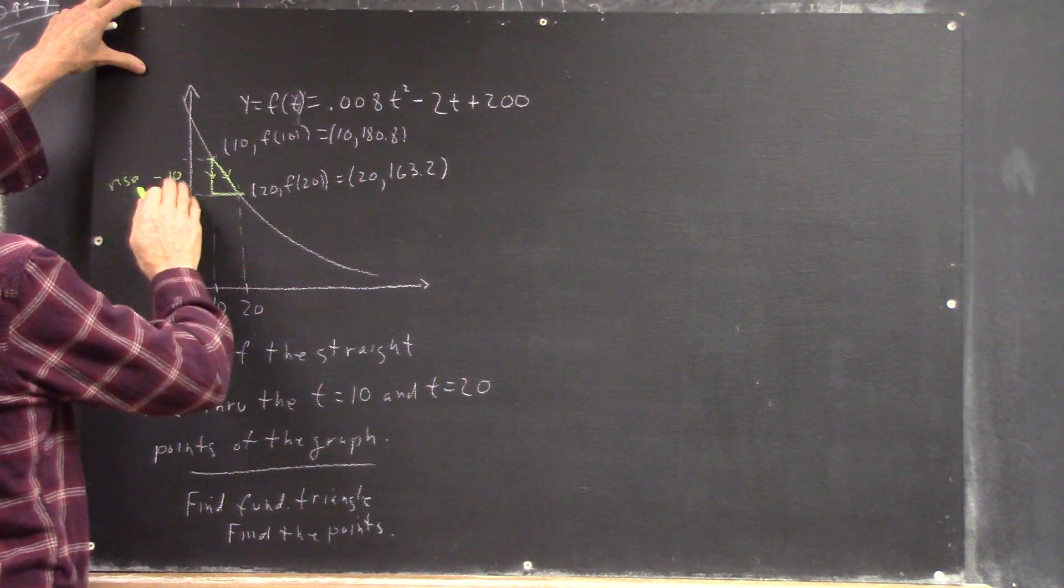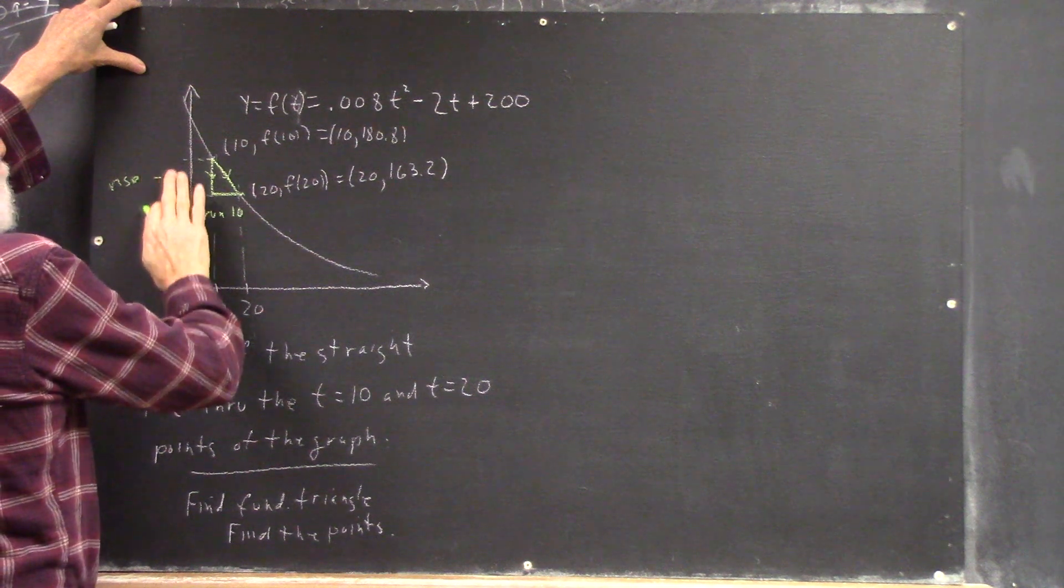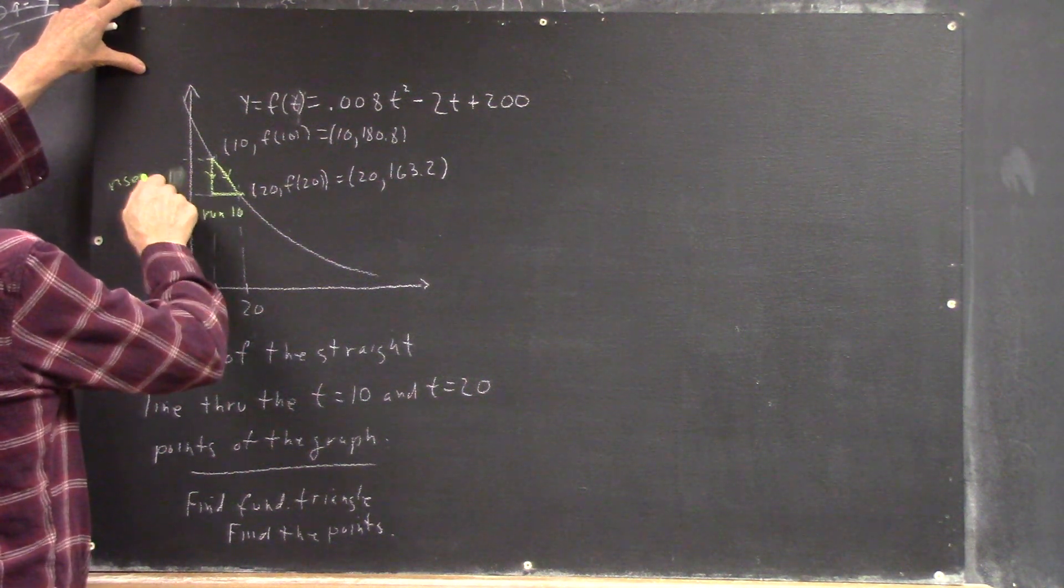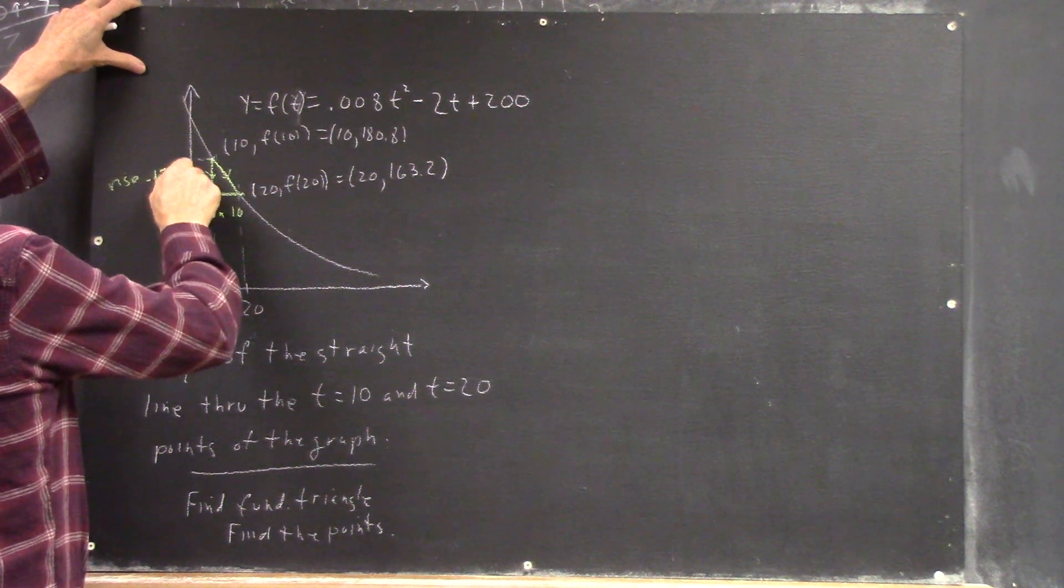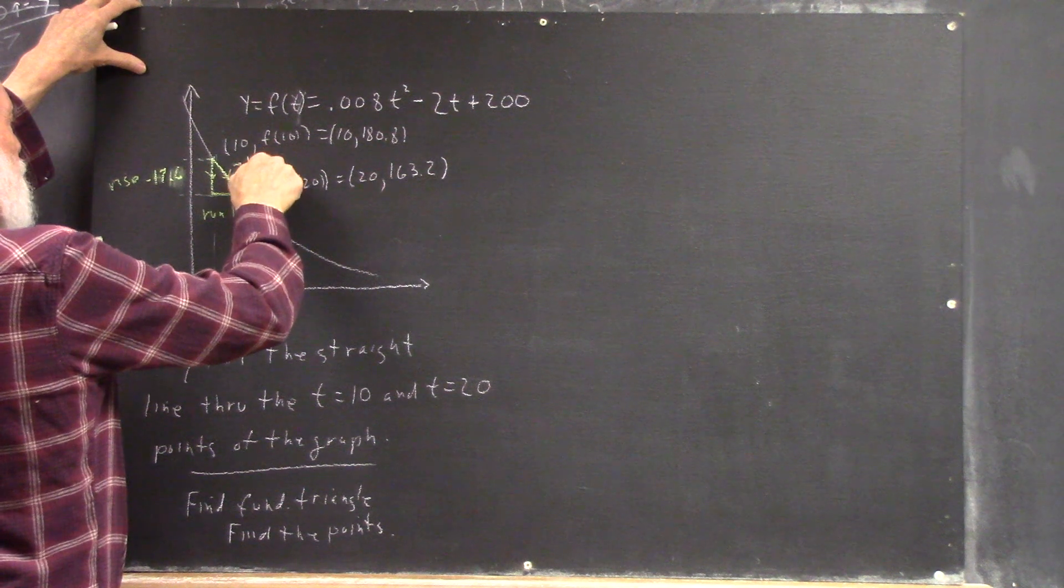Negative 10. Well, the run is 10. The rise is negative 17.6. So the slope is negative 1.76.